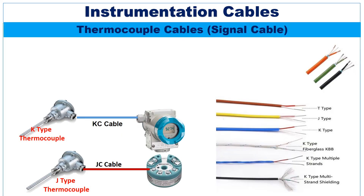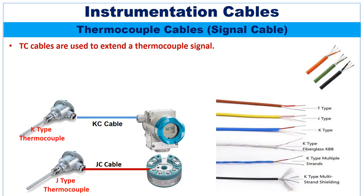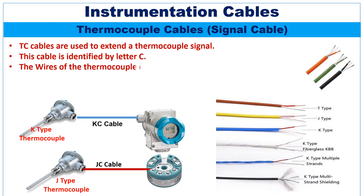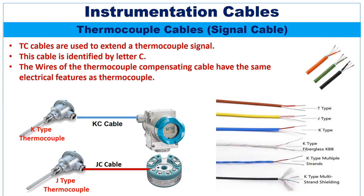Thermocouple compensating cables are also a type of signal cable. The thermocouple compensating cable is used to extend the thermocouple signal from the thermocouple to the transmitter. This cable is identified by the letter C — for example, the compensating cable for a K-type thermocouple will be a KC cable. The wires of thermocouple compensating cable have the same electrical features as the thermocouple, but do not use the same materials as the dissimilar wires of thermocouples.